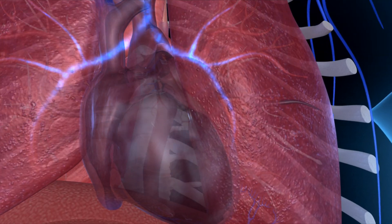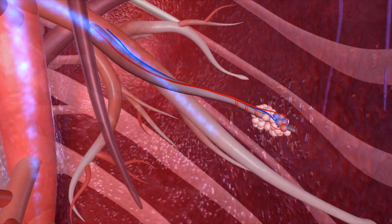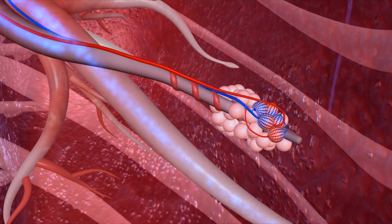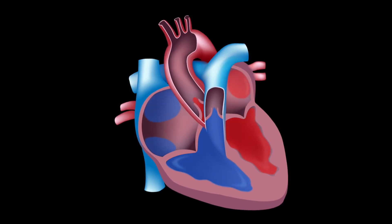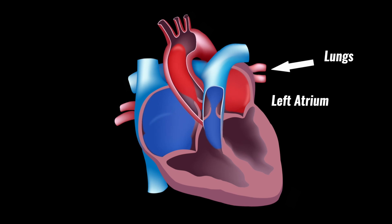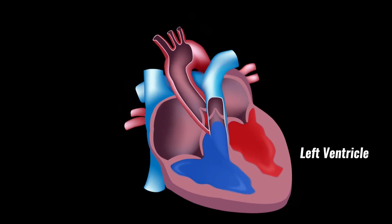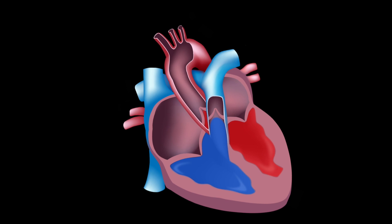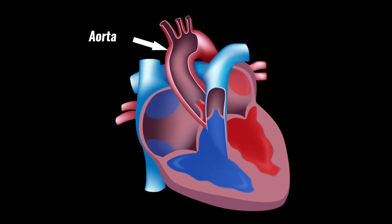It is here that oxygen passes into the blood and carbon dioxide diffuses out. The oxygenated blood then enters the left atrium, passes into the left ventricle, from where it is pumped out of the aorta to the body again.